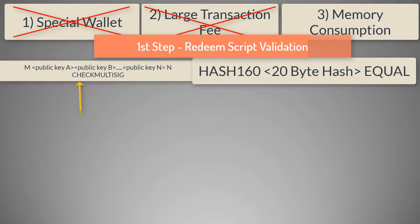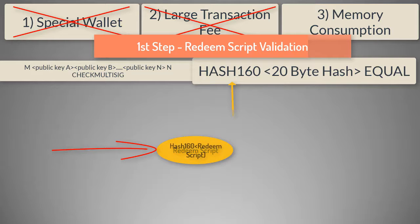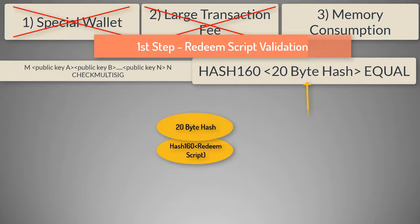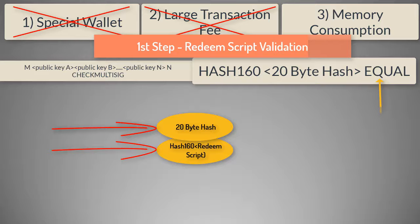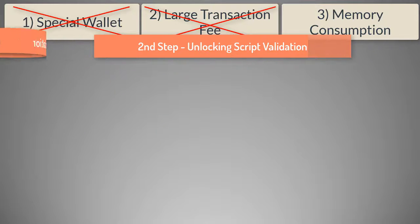Starting from the left, the redeem script is pushed onto the stack. Next, we move to the P2SH address element; HASH160 is applied, converting the element to a 160-bit hash using SHA-256 followed by RIPEMD-160. Then the hash of the redeem script is pushed on top of the stack, and the pointer moves to the equal operator. This operator tests the equality of the top two elements on the stack. These two elements should be equal if the redeem script is the same script that was used to generate the P2SH address. If the result is true, the second step begins.